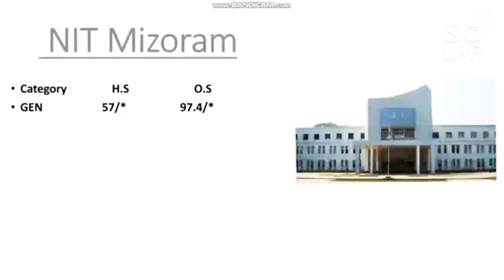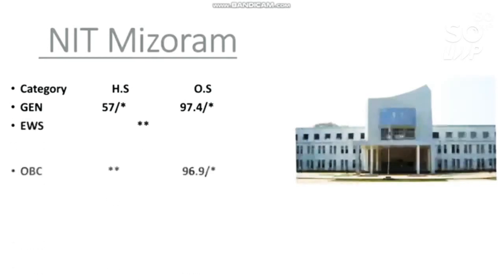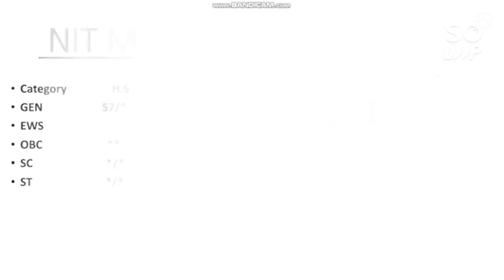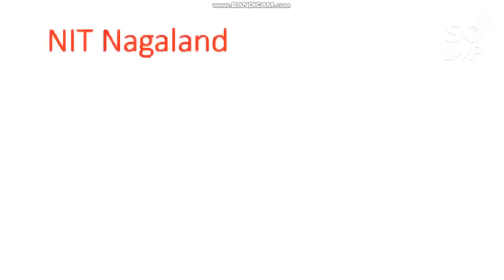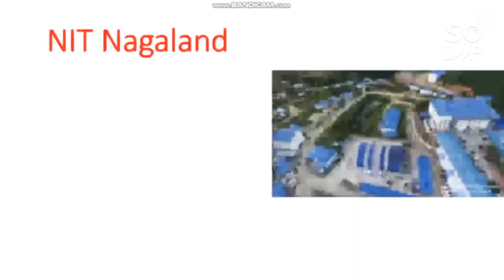Once again I remind you — for home state cutoff please check slide-wise, and for female check after the slash. EWS: no seat reserved. OBC: 96.9 percentile. For SC: 86 percentile. For ST: no seat.